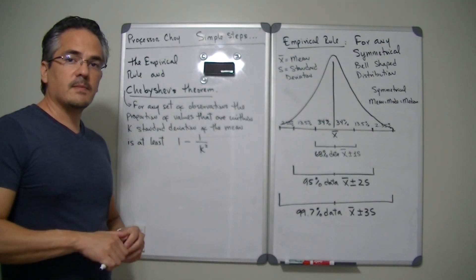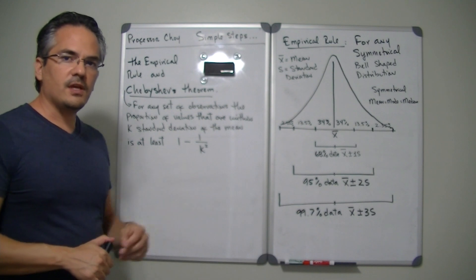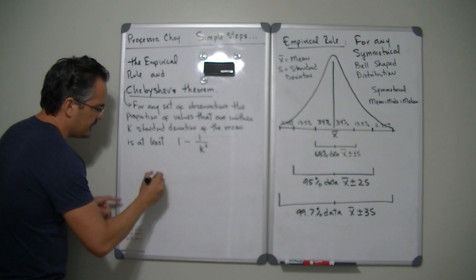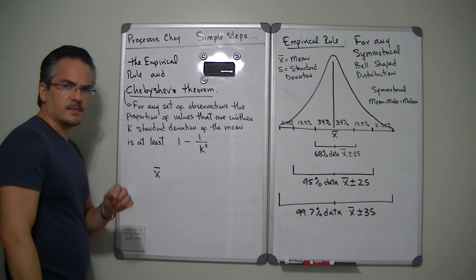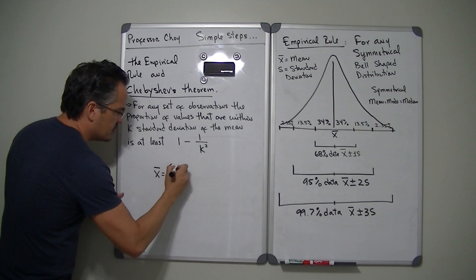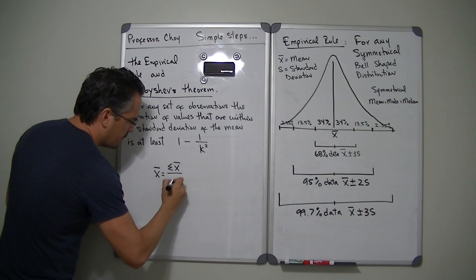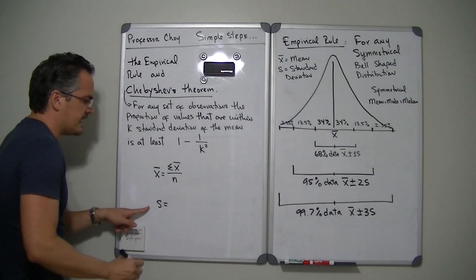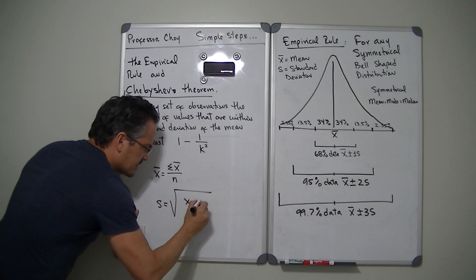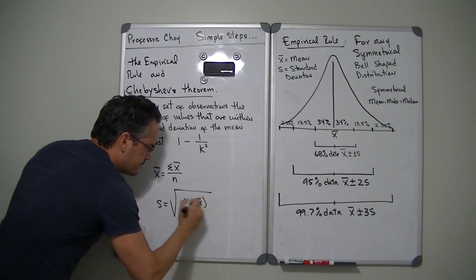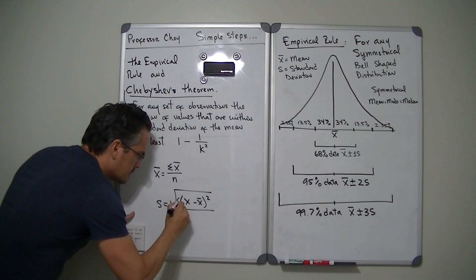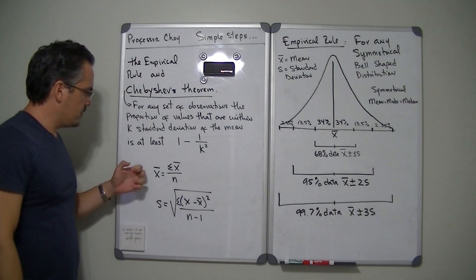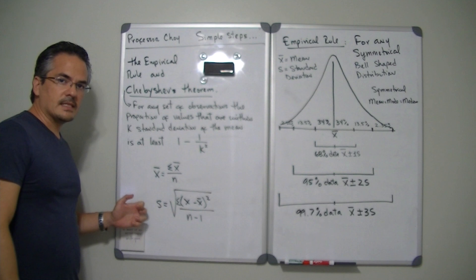In that particular video, I explained how to calculate the mean and the standard deviation for both population and sample. If you calculate the mean for a sample, the formula is summation of x over n. And if you're going to calculate the standard deviation for a sample, it is the square root of the summation of (x minus x-bar) squared, divided by n minus one. This is what we call the mean and this is what we call the standard deviation.